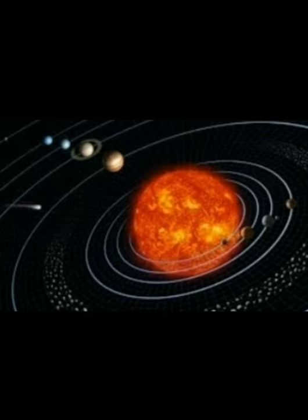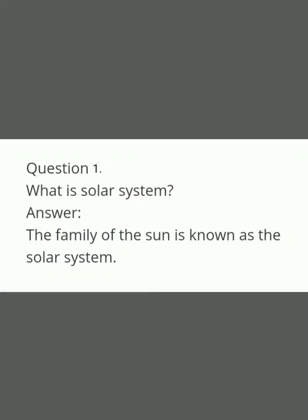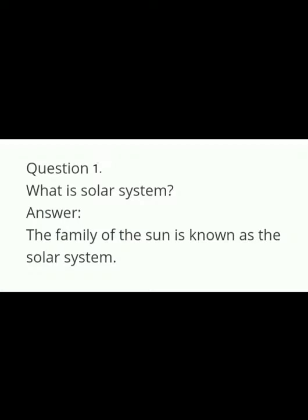Let's recapitulate what we learnt today. Question one: What is the solar system? Answer: The family of the sun is known as the solar system. In the solar system there are eight planets, 173 satellites, thousands of asteroids, meteorites and comets.